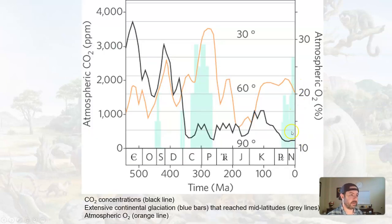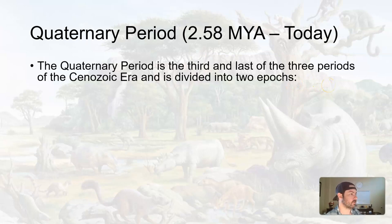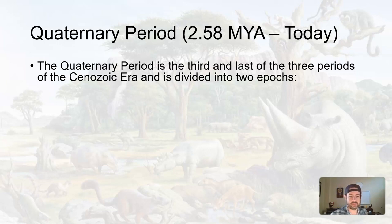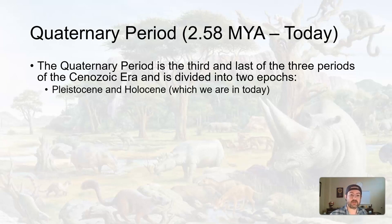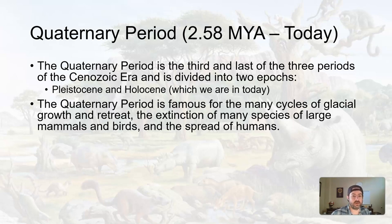We have some glaciations of course, covering about the past two and a half million years — not a lot in terms of Earth's history. It's the third and last of the three periods of the Cenozoic, divided into two epochs: the Pleistocene, which is where we had all that glaciation, and the Holocene, which is the epoch we are in today.